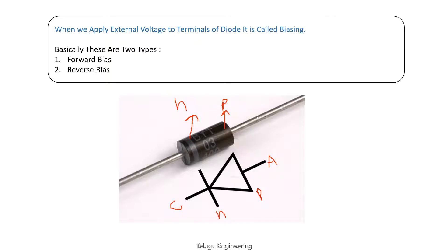That is the way to identify the terminals of a diode. Whenever we apply some external voltage to a diode, there are two possible combinations: we can give one terminal positive and the other negative, or reverse that. From these two combinations, there are two different types of biasing - forward bias and reverse bias. This video is about forward bias, and we will look at reverse bias in the next video.